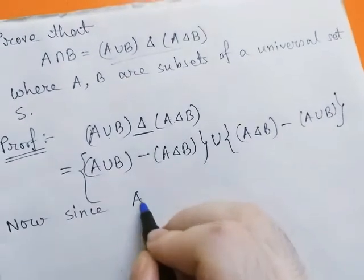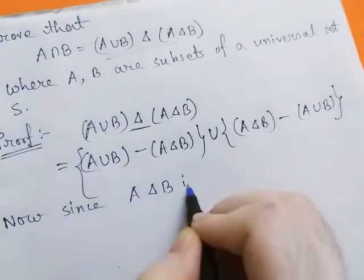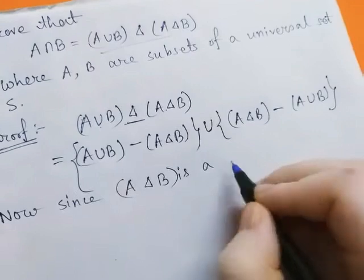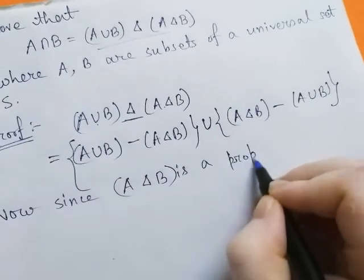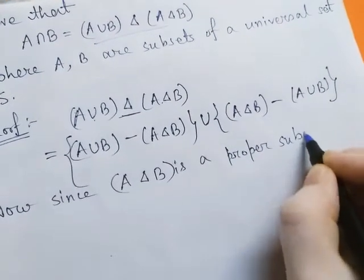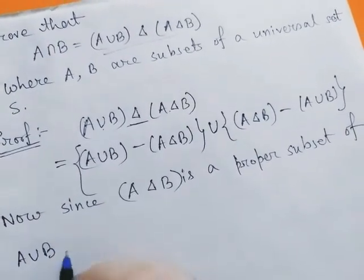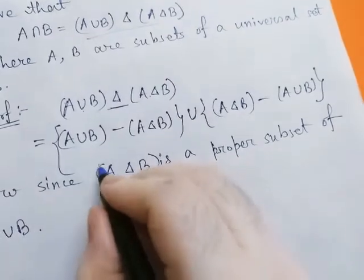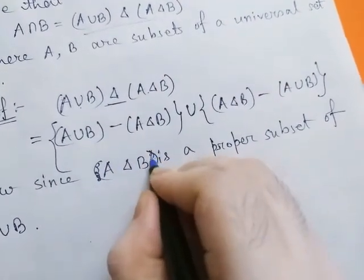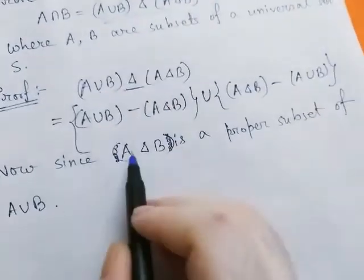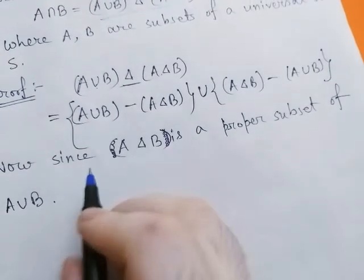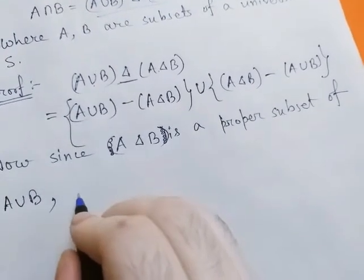Now since A delta B is a proper subset of A union B, since A delta B is proper subset of union B, don't need to write bracket. Since A delta B is a proper subset of union B, therefore...